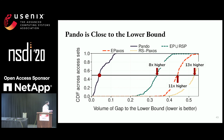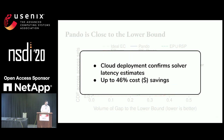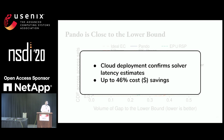There's still a gap between Pando and the lower bound, and most of this could be closed with a true one-round write protocol. All of these numbers are based on latency estimates. When we ran Pando in a cloud deployment, we confirmed that the latency estimates were reliable indicators of actual latency, and we also saw significant cost savings when considering compute and bandwidth costs.